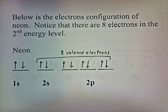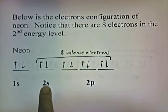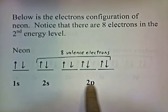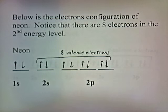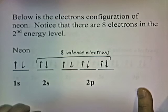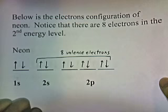Below is the electron configuration of neon, and notice there are eight electrons in the second energy level. The highest energy level with electrons is the second energy level, and we have two, four, six, eight — so eight valence electrons. That's an octet, and that's what makes atoms the most stable.